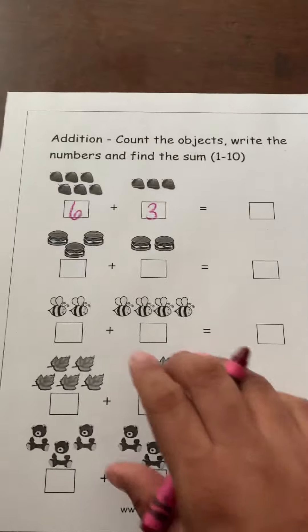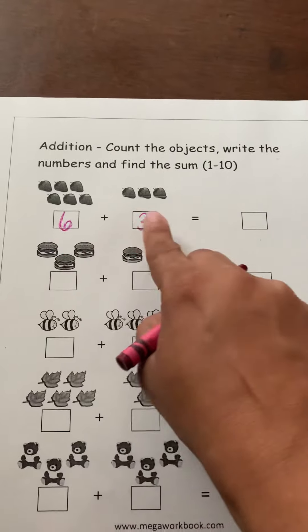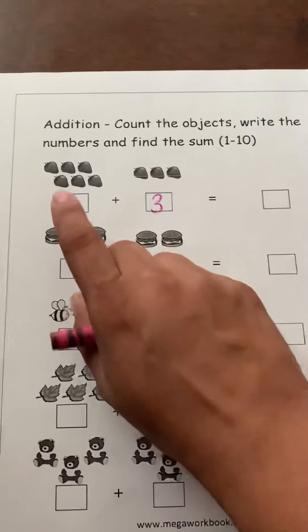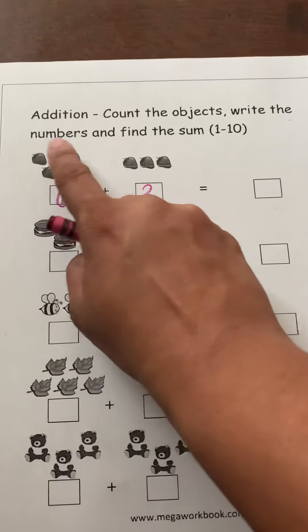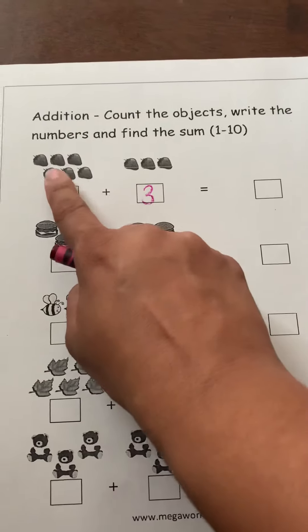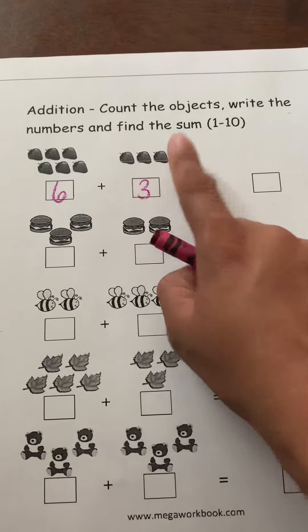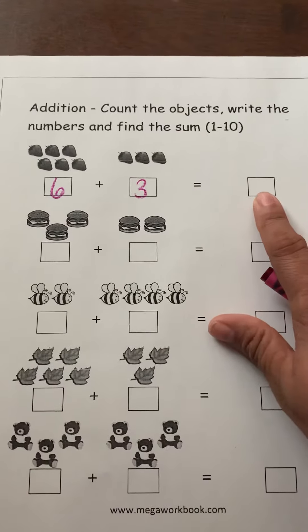And then we're going to tell them, okay, six plus three, we need to count them all together. And then they're going to count all together. One, two, three, four, five, six, seven, eight, nine. And then you can put the nine right here.